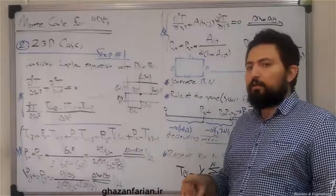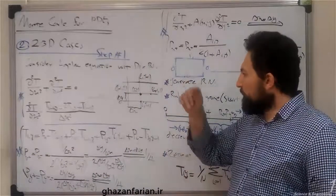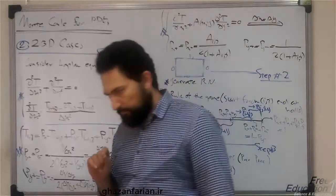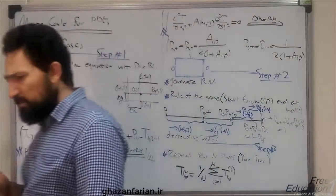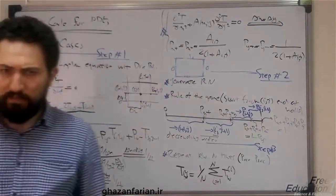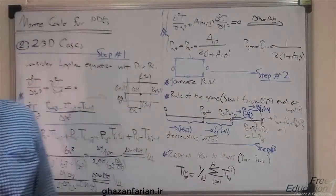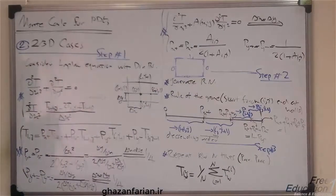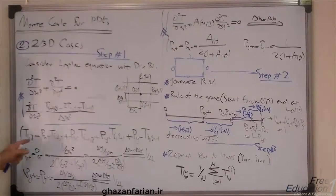When all coefficients equal 1/4, it means the temperature at the central point is the average of the temperatures of the four neighboring points. This is the well-known discretization of the Laplace equation in finite differences.